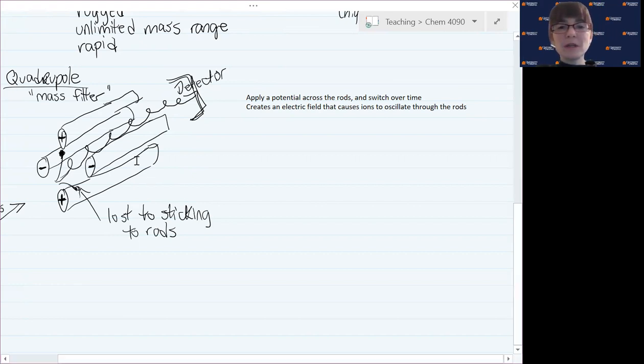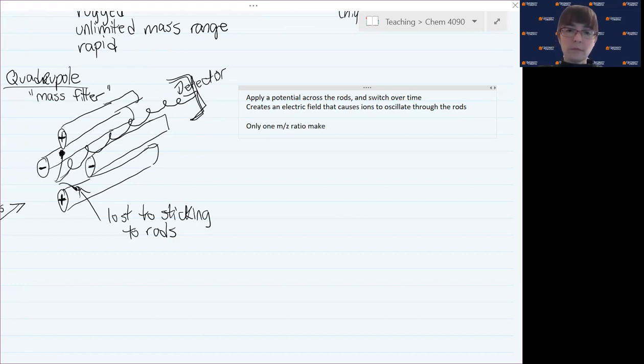What's nice about this is we can actually control the frequency of oscillation and the amplitude so that we know what m over z will make it through. We can then tune this so that only one m over z makes it through at a time. How would you collect a mass spectrum which tells you the contents of your sample at a variety of m over z's? You would have to tune the frequencies at which you're oscillating so that different m over z's make it through over time.